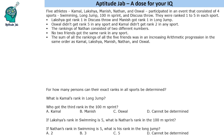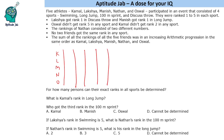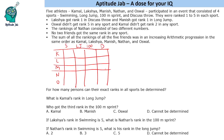So these are the 5 people — K, L, M, N, O — and they participated in 4 sports: swimming, long jump, 100m, and discus throw. They got ranks 1 to 5 in each sport.